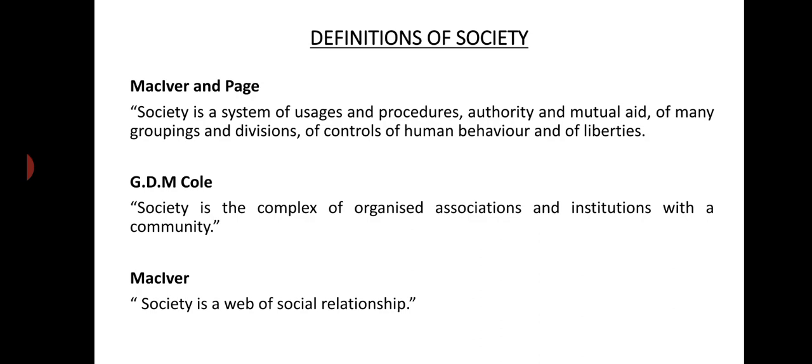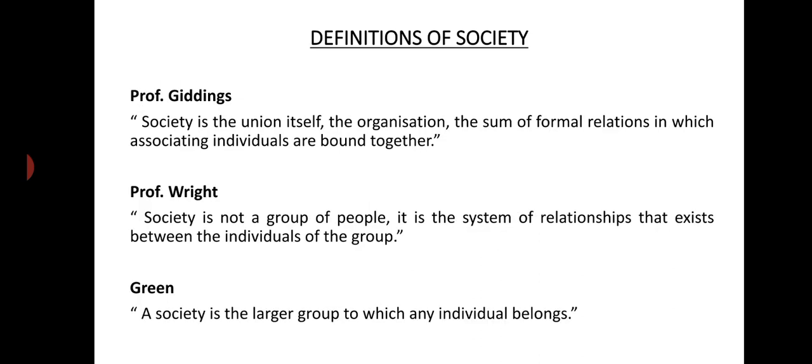Let us have a look at some more definitions. As per Professor Giddings, society is the union itself, the organization, the sum of formal relations in which associating individuals are bound together. So Professor Giddings says that society is a union or an organization — the sum total of formal relationships in which different individuals are bound together.